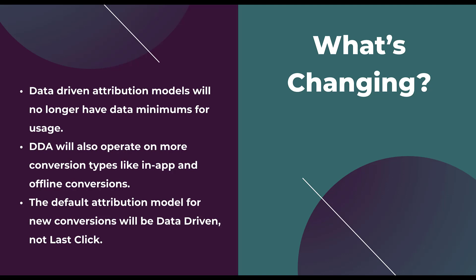Not only will you be able to utilize data driven attribution without any minimums, it is now going to be the default attribution model for all new conversion actions within your account. No longer will last click be the default — data driven will actually be that default model. In addition, Google will start to opt in your existing conversion actions into the data driven model, but it'll give you a heads up beforehand with a number of alerts. So moving forward, all new conversion actions and your existing ones will be adjusted to be data driven and away from last click.